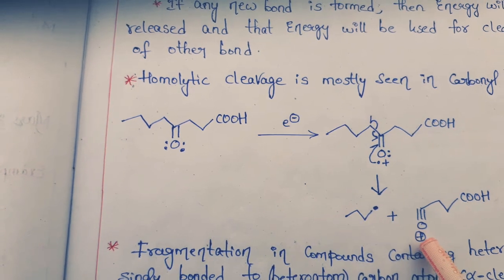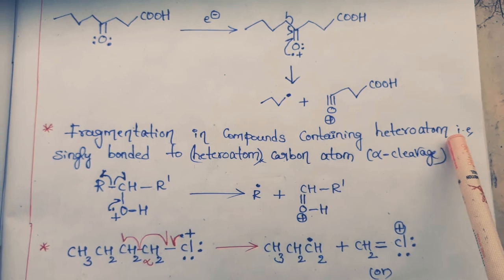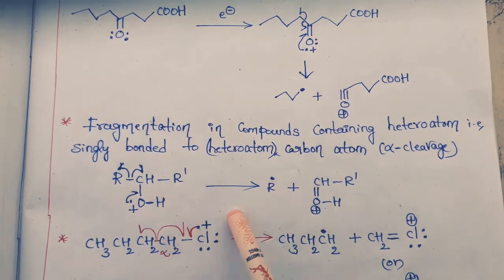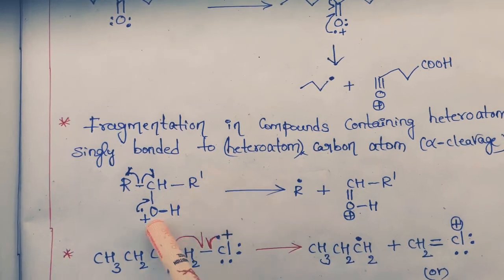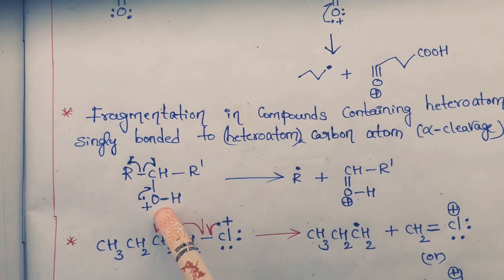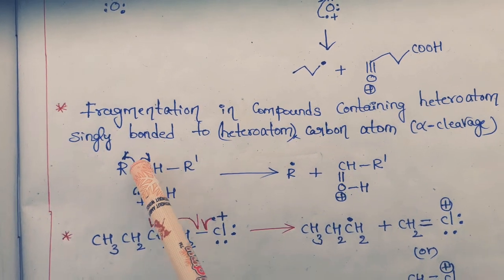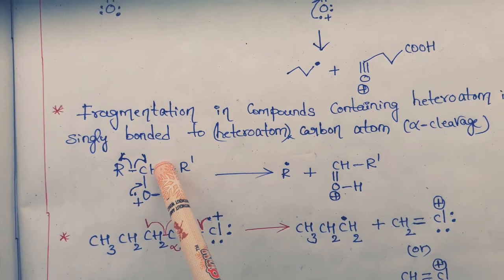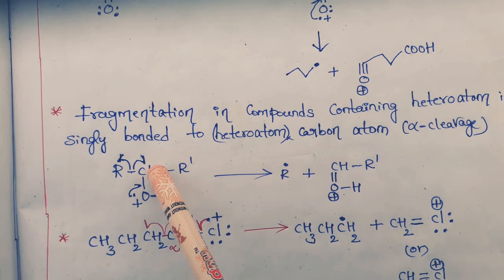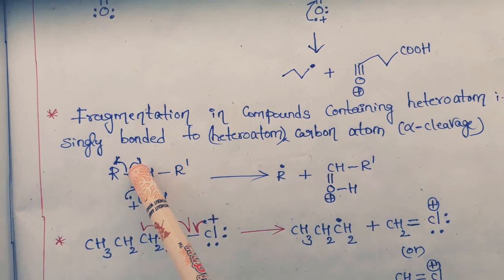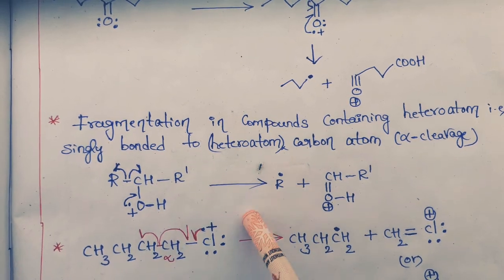The next example shows fragmentation in compounds containing a heteroatom singly bonded to a carbon atom. Here also, the homolytic cleavage is initiated from the radical side. The oxygen atom has a single radical and a positive charge. The radical moves toward the adjacent bond; one electron moves to this side and the other to that side. Using these two electrons, a new bond forms on the carbon atom, while a single radical remains on the alkyl group and the positive charge stays as usual.